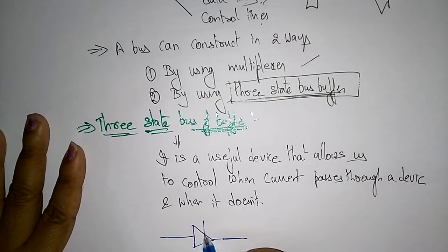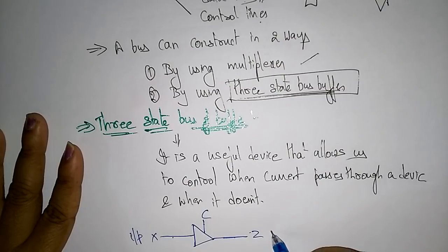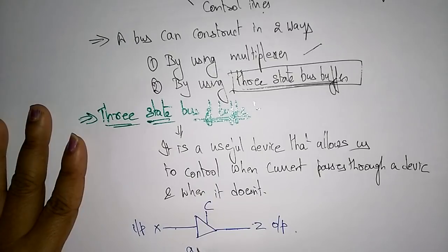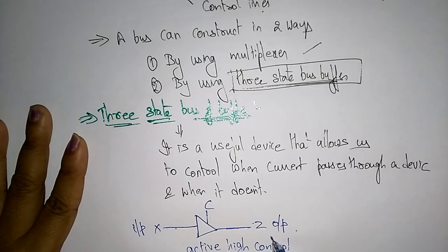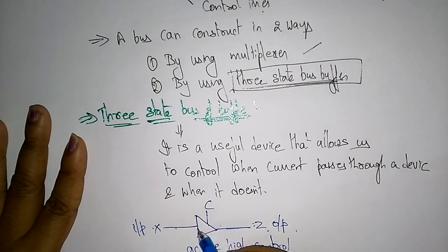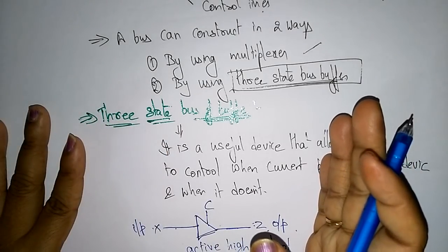A diode is connected with three states: X, C, and Z. X is the input, C is the controller, and Z is the output. Whenever the three-state bus buffer has active high control, whatever input you give, the buffer will send that to the output. A buffer is used to only store the data — whatever input is given, it sends that to the output.